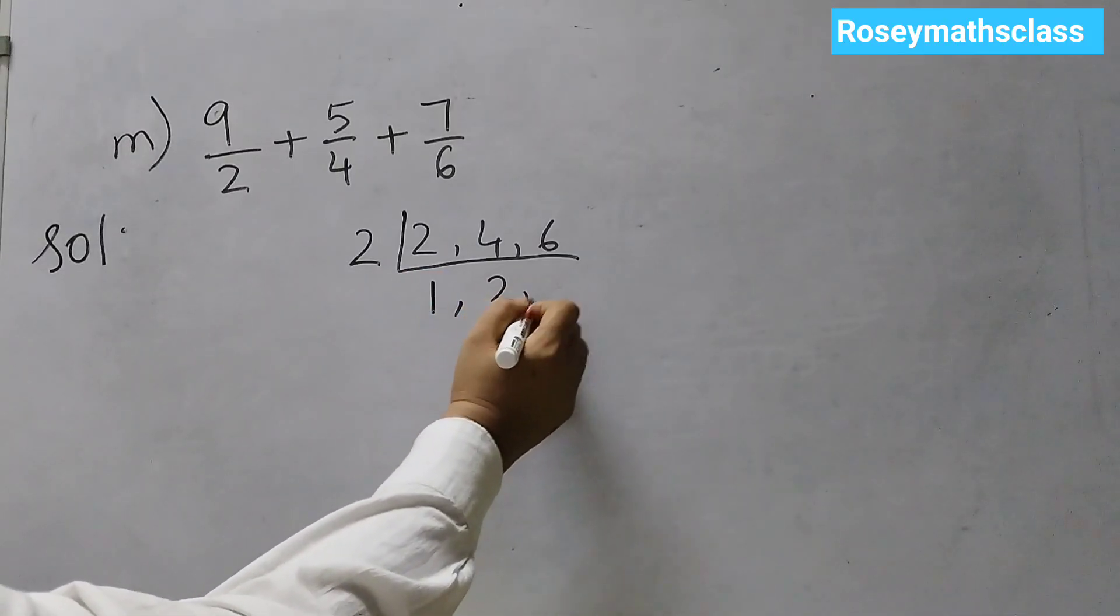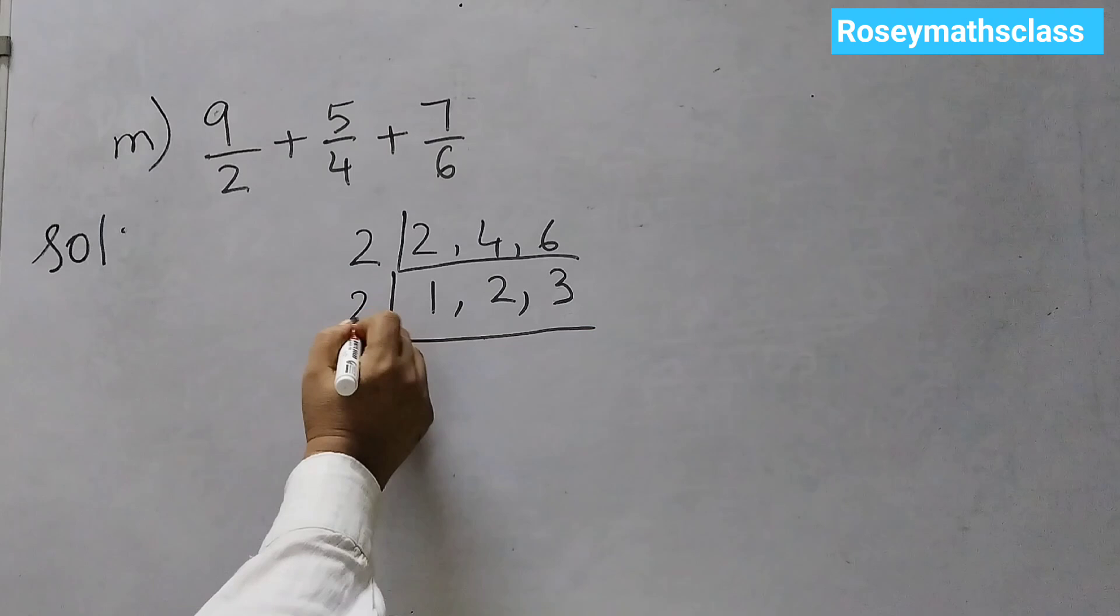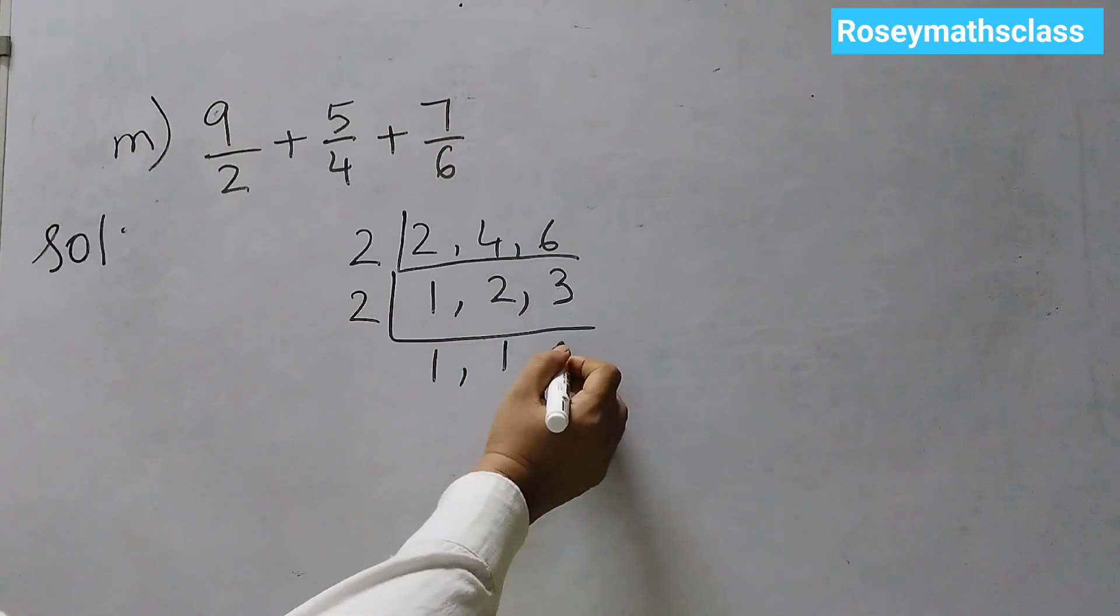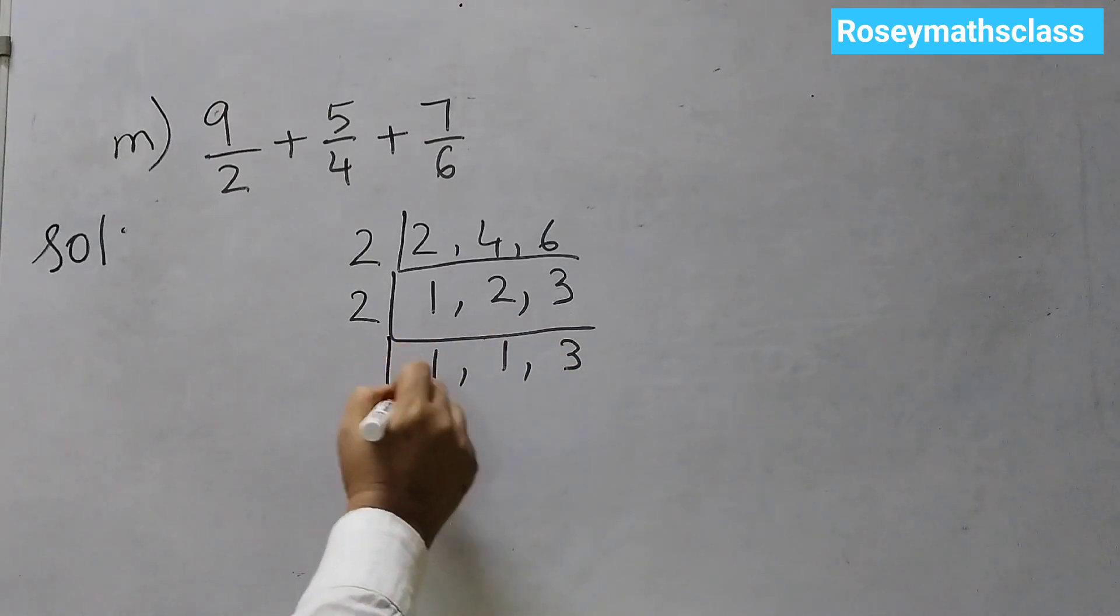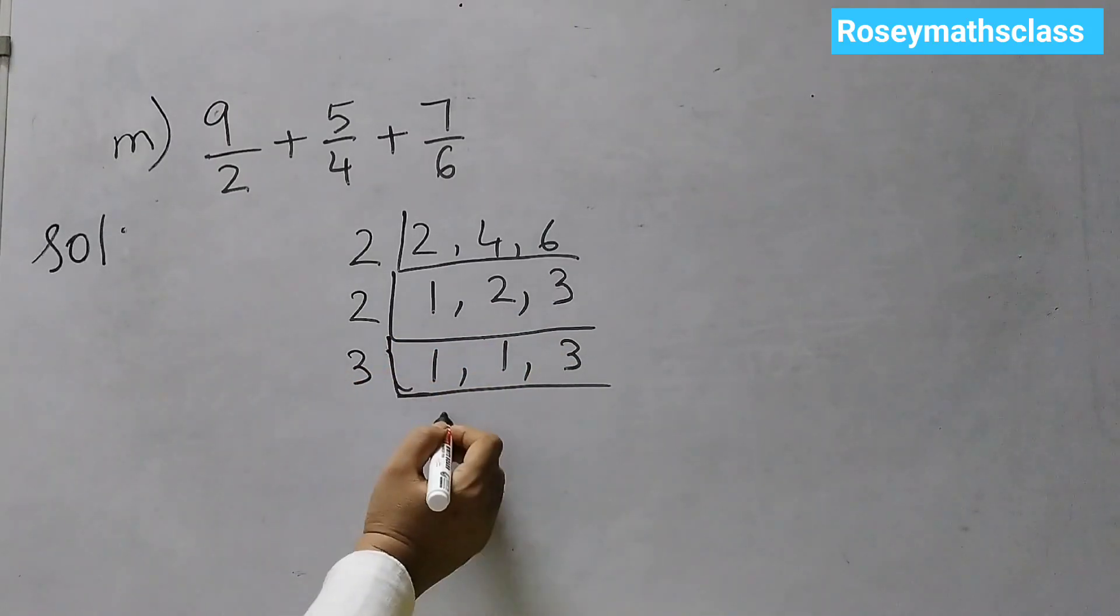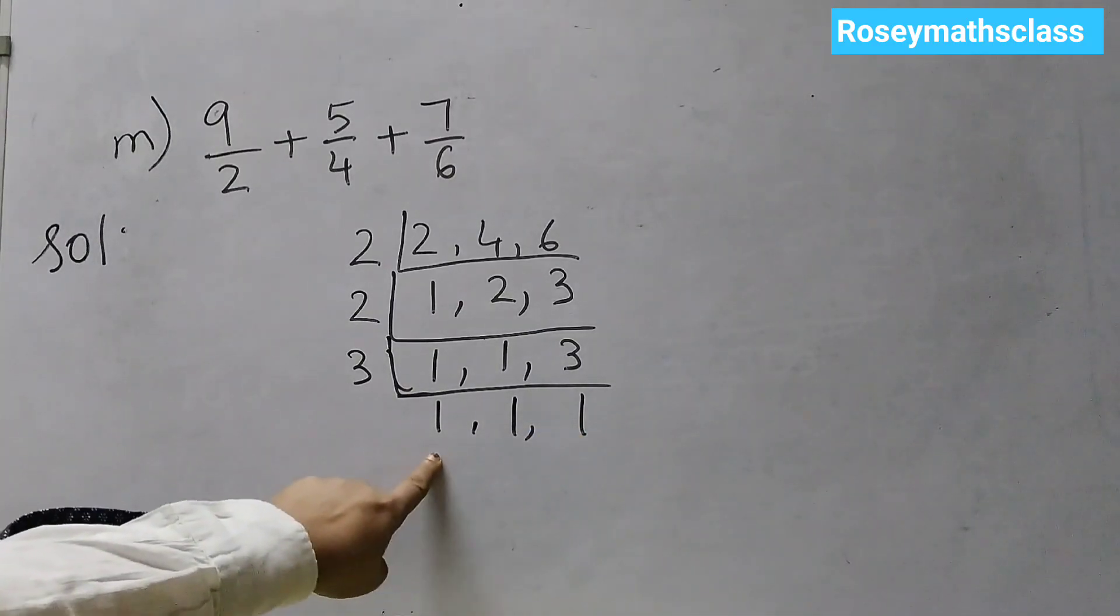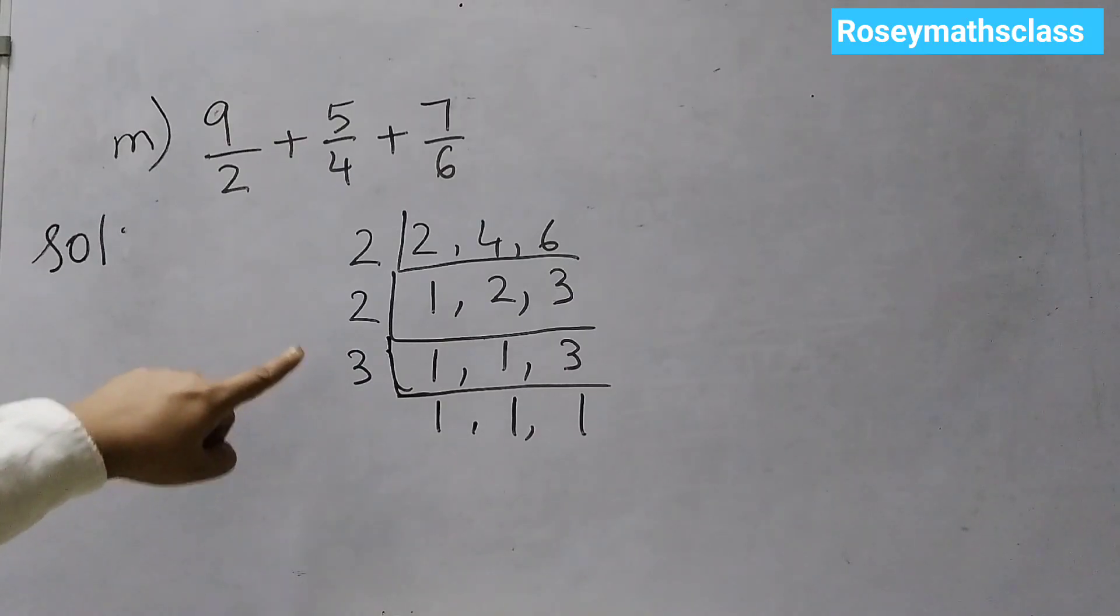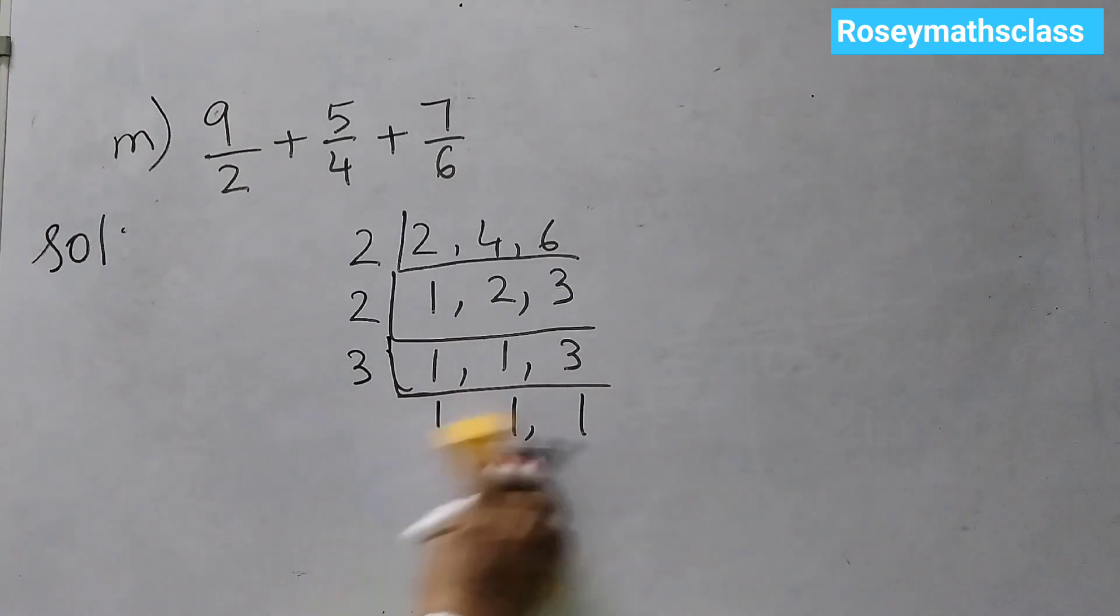Then we take 2. 2 ones are 2, 2 twos are 4, 2 threes are 6. Then again, you divide by 2. So, 1 comes down as it is, 2 ones are 2. 3 comes down as it is because 3 is not divisible by 2. 3 is left. So, we will divide by 3. 1 comes down as it is, 3 ones are 3. So, here we have all ones. That means we are done. And now multiply all these numbers. So, 2 twos are 4, 4 threes are 12. The LCM would be 12.